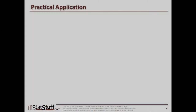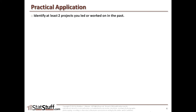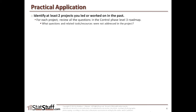Before we close this lesson, let's discuss how to apply some of these concepts practically. Identify at least two different projects you've led or worked on in your organization. For each project, review the questions down to level three for the control phase, and ask yourself what questions within that level three — and any related tools or resources identified — were not addressed in the project. If they weren't addressed, why not? And what different outcomes or results could have been realized if they had been addressed?